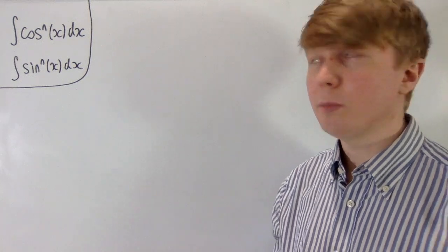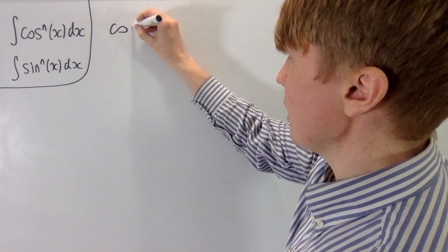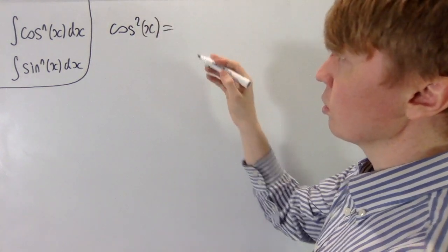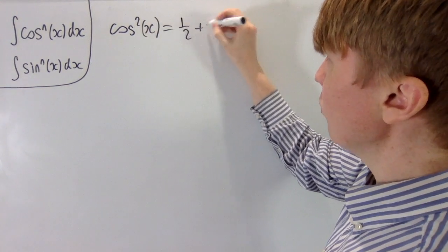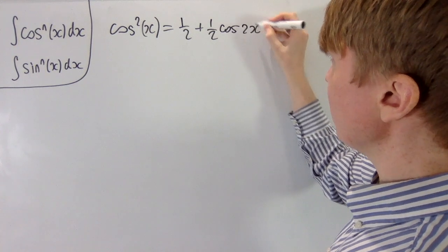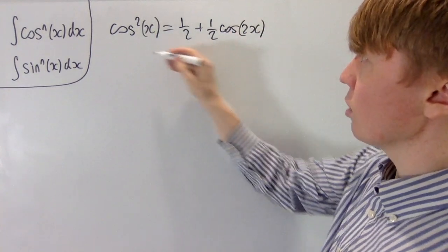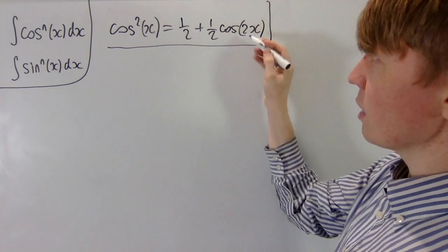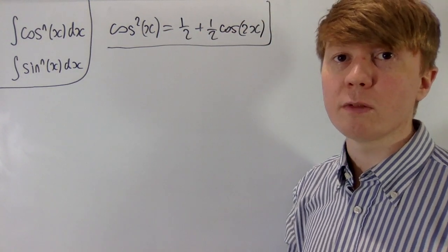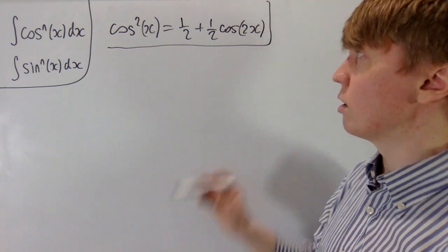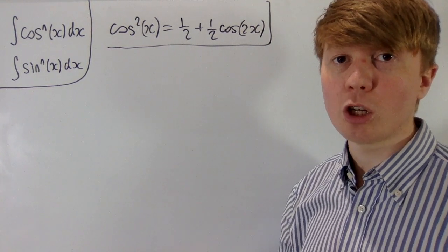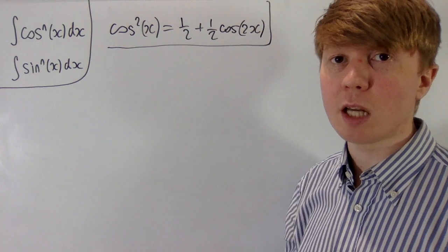If you had a small power n, maybe just cos²(x), then we could use our double angle formula for cos, rearrange to make cos²(x) the subject, and express it as a half plus a half cos(2x), which is a simple function to integrate. You could do something very similar for sin(x), again using the double angle formula for cos, and we could use triple angle formulas for cos³(x) or sin³(x).